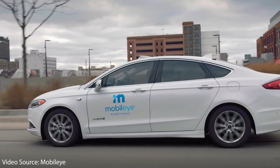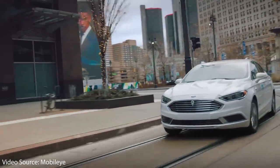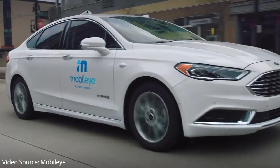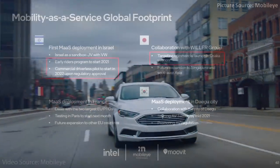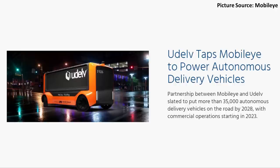When it comes to Mobileye's projections and when they believe they'll have a completed system, in a recent presentation, they talked about how they want to reach consumer level autonomous vehicles sometime in 2025. When it comes to the robo-taxi fleet, they hope to have an early riders program sometime this year and to have a commercial driverless pilot program in Israel in 2022. They also hope to launch this in other parts of the world as well in the coming years. Also, with a recent partnership they've had, they hope to have 35,000 autonomous delivery vehicles on the road by 2028 and they should start commercial operations with this partnership in 2023.